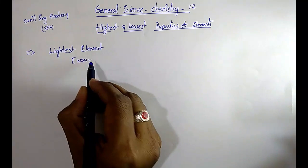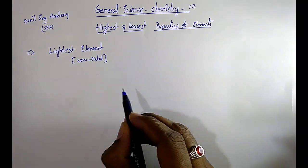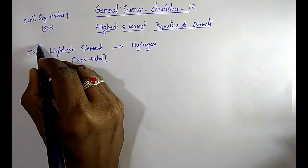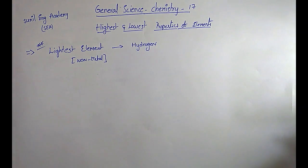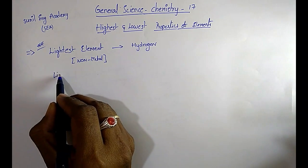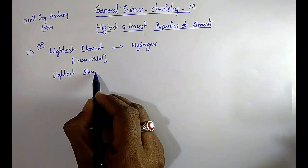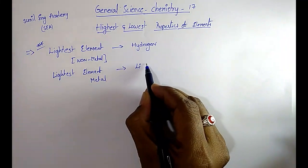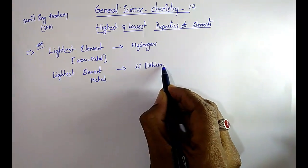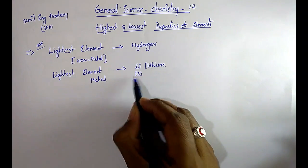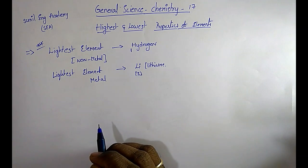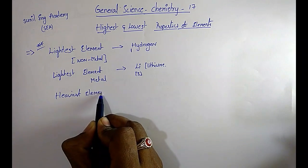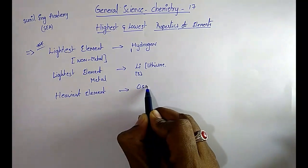First, what is the lightest element? In case of nonmetals, the lightest element is hydrogen — very important. In case of metals, the lightest element is lithium. We know that the atomic number of lithium is 3 and hydrogen's atomic number is 1. The next one: what is the heaviest element? It is osmium — osmium is the heaviest element.